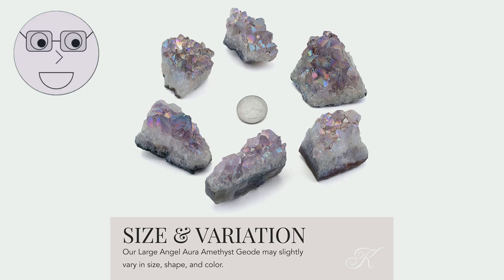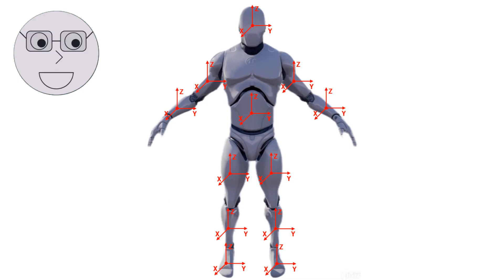The specific gravity of a mineral is its density compared to the density of water. This property can be used to identify minerals.